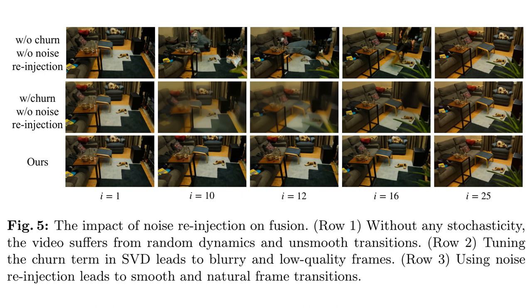Hey everyone! Welcome to AI Breakdown, where we give you the scoop on the newest AI research. Ever wonder about turning two still images into a captivating video sequence? We're looking at a paper today that tackles just that. Flip to figure 5 and you've got a front row seat to this thing called time reversal fusion, or TRF — fascinating, like watching fragmented stills transform into a smooth video narrative, all thanks to some clever tricks with noise.